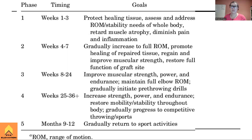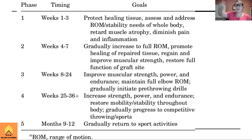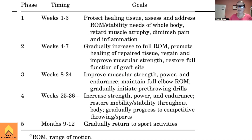Past eight weeks, we improve muscular strength and endurance while maintaining full range of motion. The boards won't quiz you on exact protocol timelines, but conceptually: from roughly 8 to 24 weeks, you're focused on strength and endurance. Around 24 weeks, you introduce motions similar to throwing but not exactly throwing. From 25 weeks onward — approaching nine months — you're increasing power, endurance, mobility, and stability, working toward higher-level sport-specific activities.